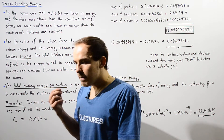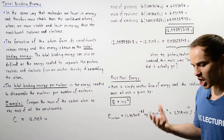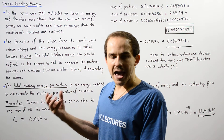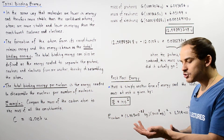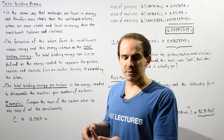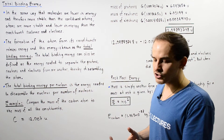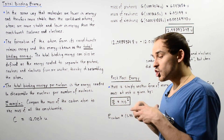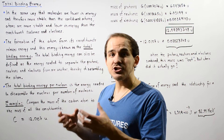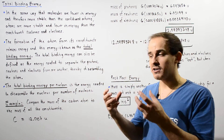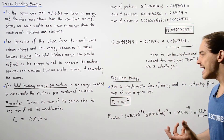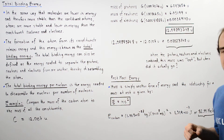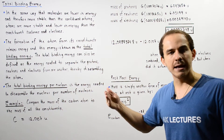Albert Einstein was able to show that mass is simply another form of energy, in the same way that we have potential energy, gravitational potential energy, electric potential energy, and kinetic energy — we have mass energy. So whenever we have a stationary object with a certain mass, it has a certain quantity of energy given by the equation E equals MC squared.